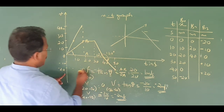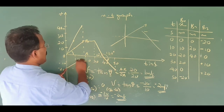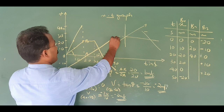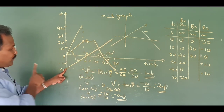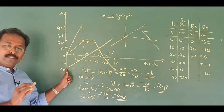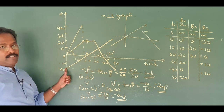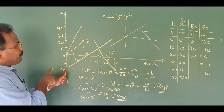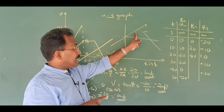Do you see the position-time graph? Do you see the velocity being positive and negative on this graph?